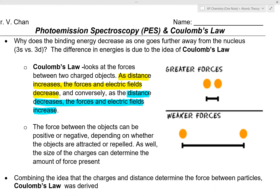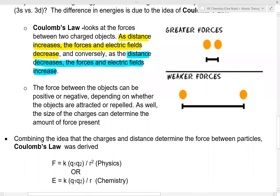The bigger the distance, the weaker the force. The force between objects can be positive or negative depending on whether they attract or repel each other — measured as force of attraction or repulsion. Not only distance, but also the size of the charges determines the amount of force between two charged particles.